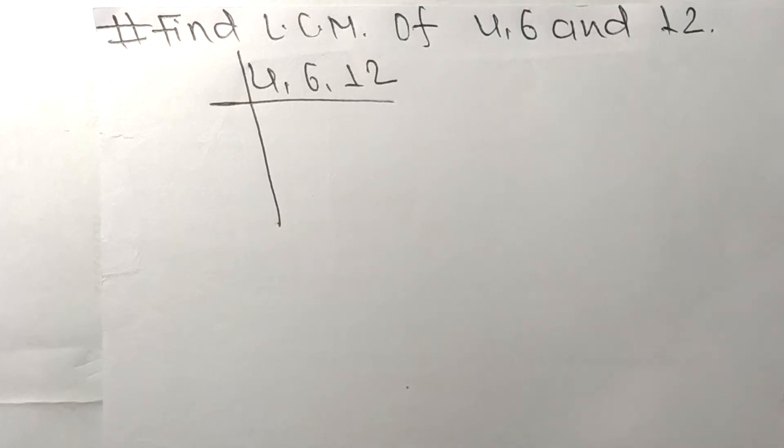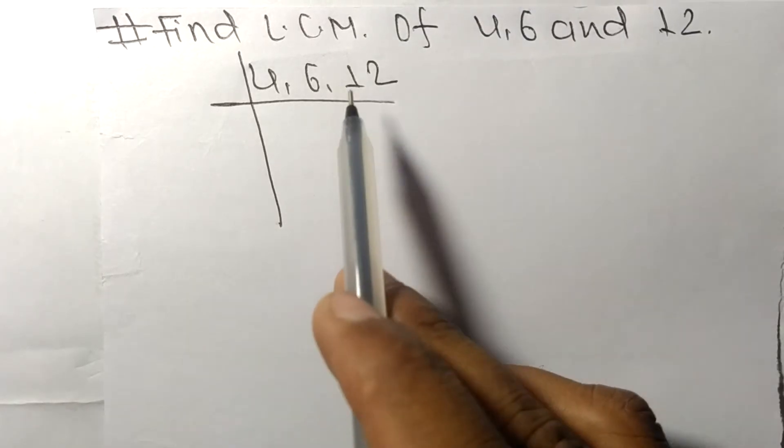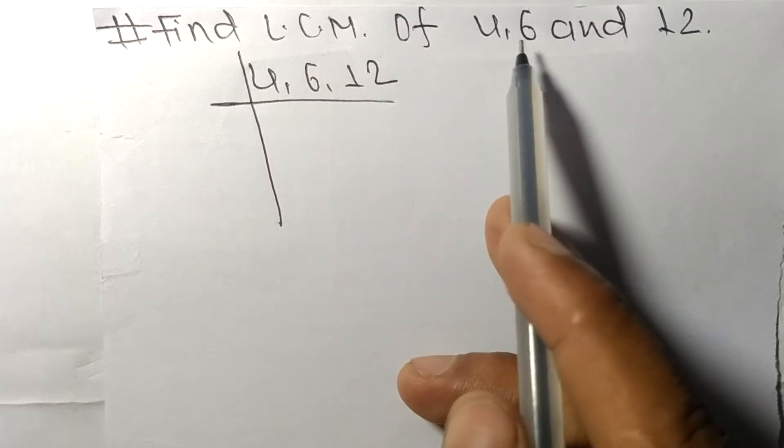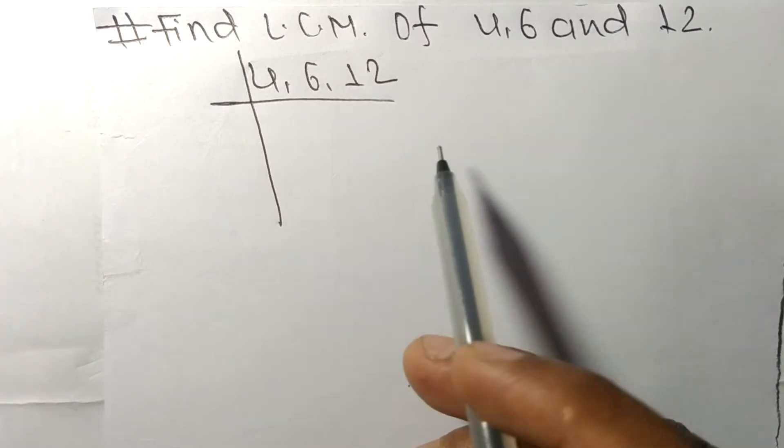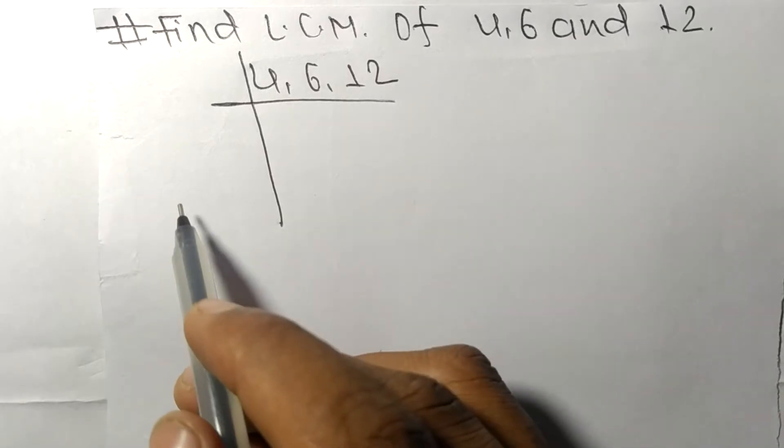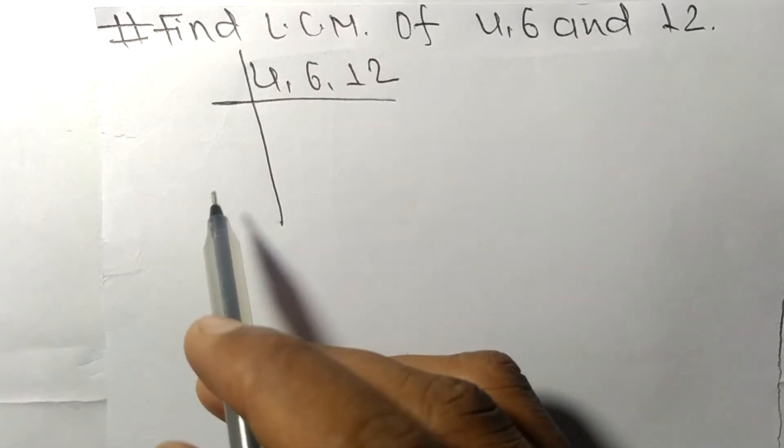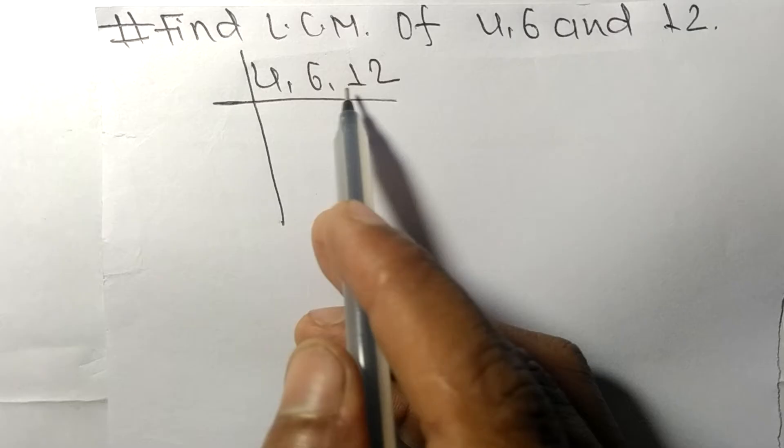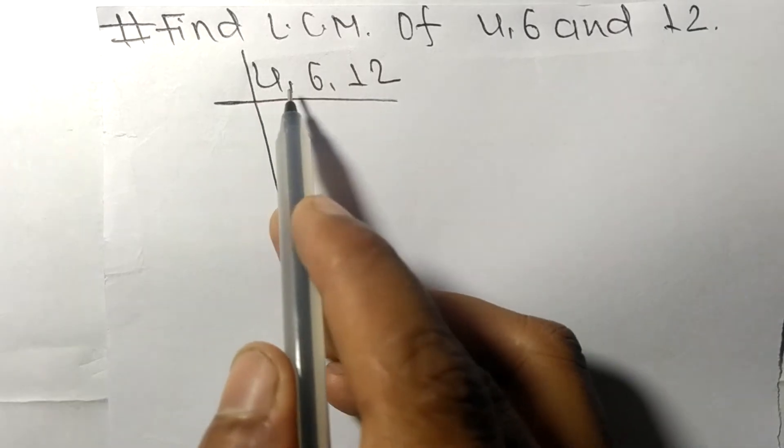Today in this video, we shall learn to find the LCM of 4, 6, and 12. To find LCM, we have to choose the lowest number that can exactly divide any two of these numbers.